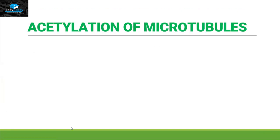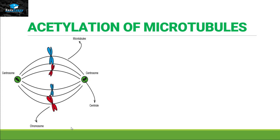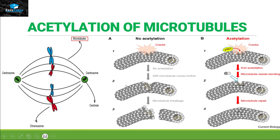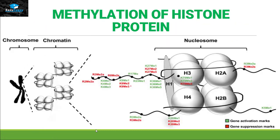Acetylation of microtubules: microtubules are present in every cell and their main function involves mitosis and meiosis where chromosomes attach to spindle fibers. The major modification on microtubules is acetylation. One microtubule without acetylation modifications and another with acetylation modifications: if a crack or damage occurs at one part of the microtubule, acetylation will occur on lysine at position 40. If this lysine is acetylated, it will resist the microtubule from bending and help in the repair system. If there is no acetylation, the crack will grow bigger and result in the breakage of the microtubule.